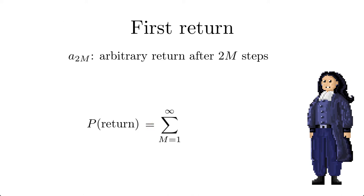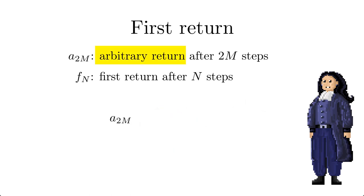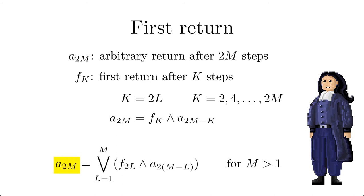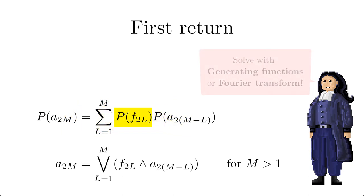What we need instead is the probability for the first return after n steps. There is a clever way to compute it. The first part of an arbitrary return is always a first return. If the arbitrary return occurs after n equal to 2m steps the first return may happen at k steps and the remaining steps again describe an arbitrary return. So we can decompose any arbitrary return into first return and remaining arbitrary returns. This equation can be solved for the desired probability of first return by what is called the generating function or a Fourier transform.